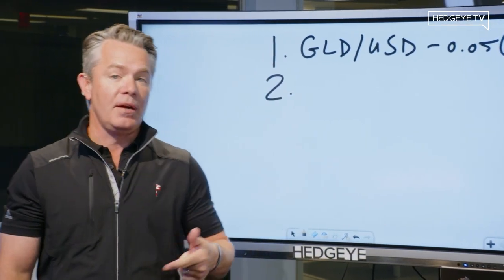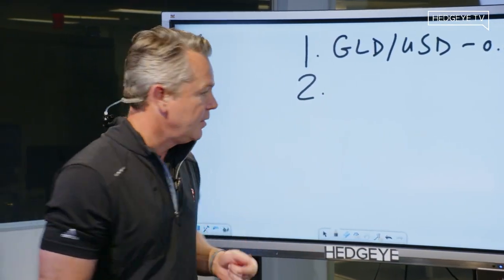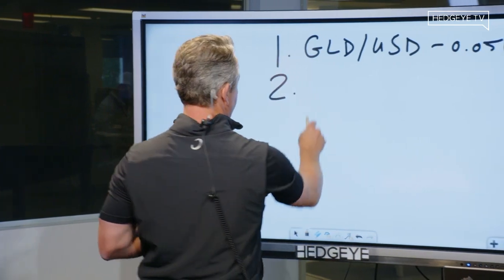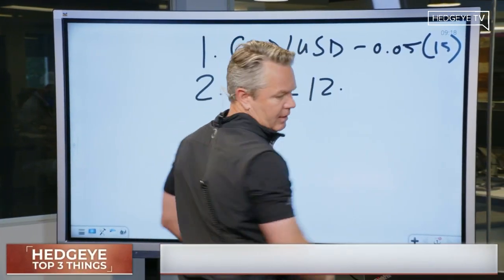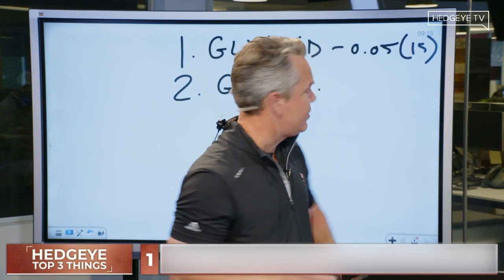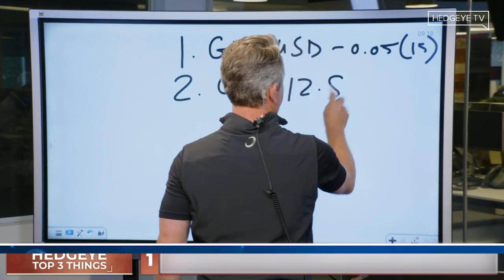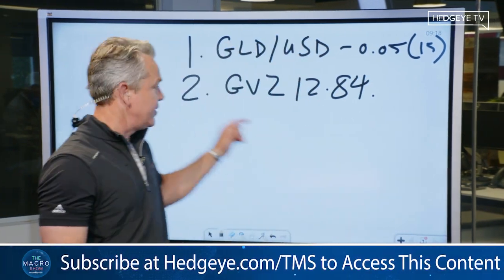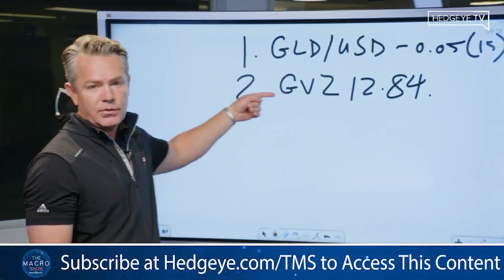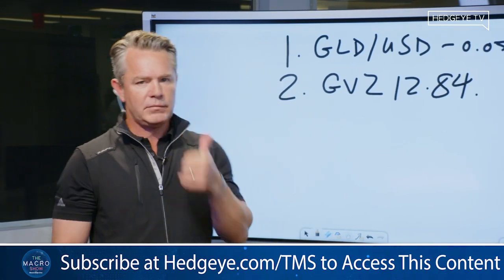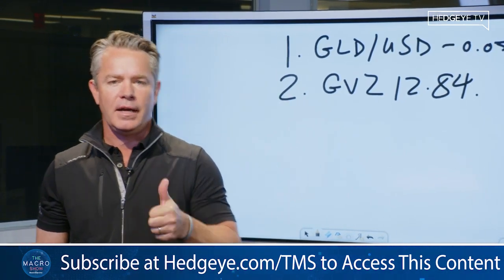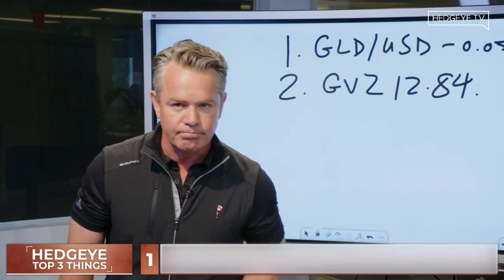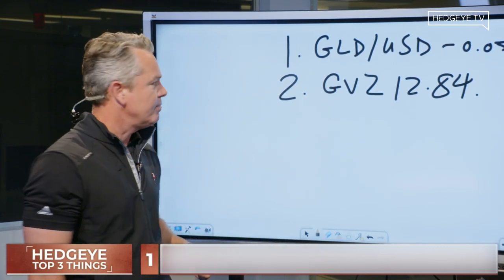Another thing I'll say, which I also said about gold that's very bullish, is where GVZ went up. GVZ at 12.84 — that's gold volatility, the equivalent of the VIX for gold. That's the best thing in the world you can buy on a volatility-adjusted basis today. Write it down.